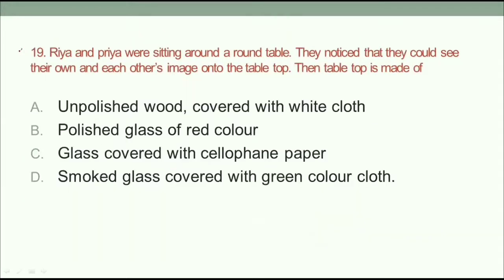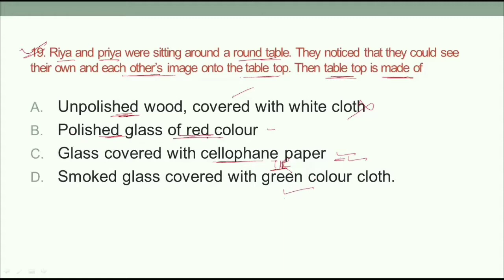Question number 19: Ria and Priya, two girls, are sitting on a round table and could see each other's image on the table top. The question is: what is the table top made of? Option A: unpolished wood covered with white cloth — this won't show an image. Option B: polished glass of red color — this can show an image. Option C: glass covered with cellophane paper. Option D: smoked glass covered with green cloth.